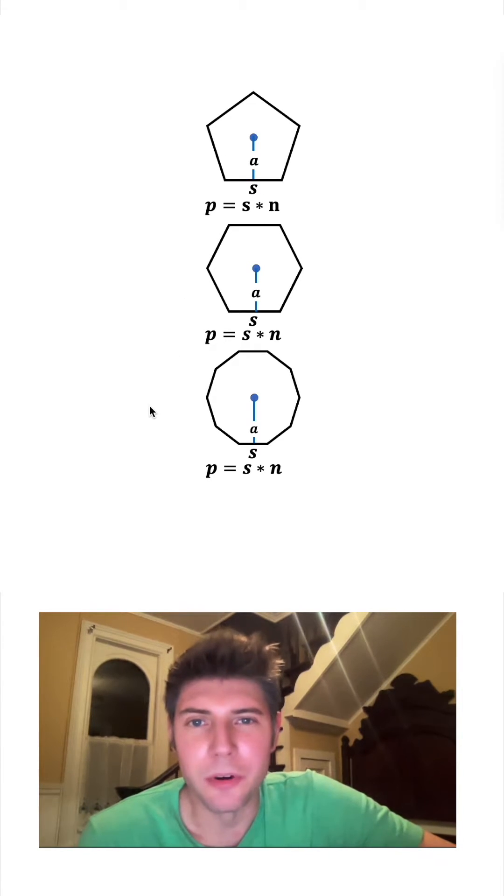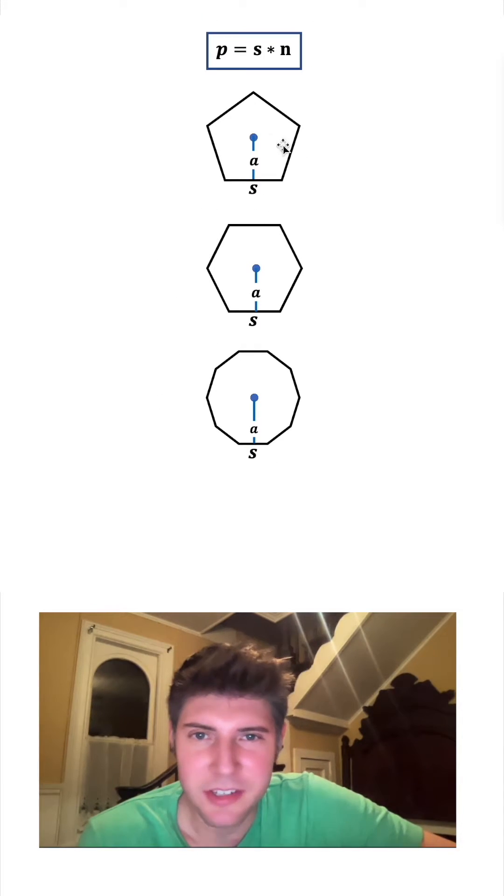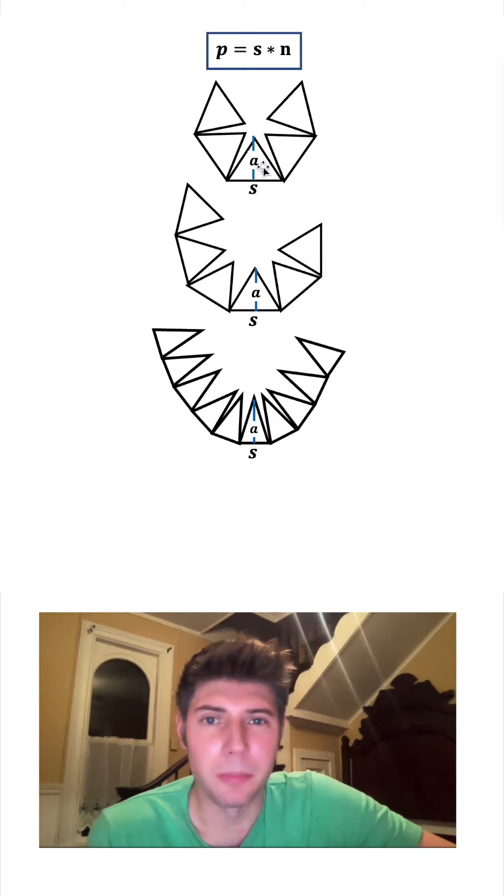And since all these have the same formula, let's bring it up to the top and we'll put a box around it. Next step, we're gonna connect the midpoint to the vertices of all the shapes, and then we're gonna start pulling the figures apart.